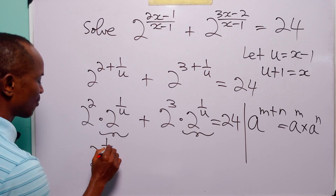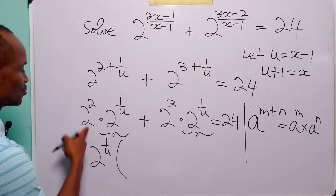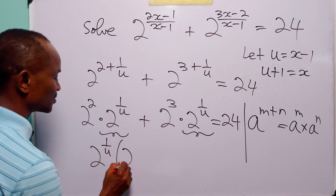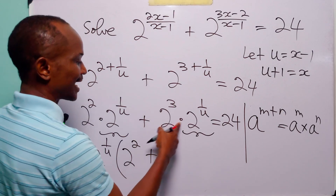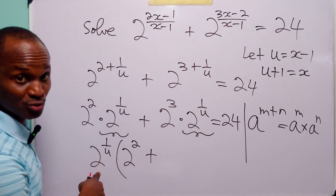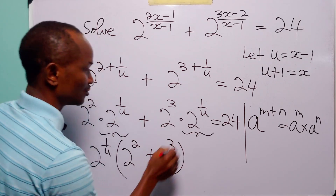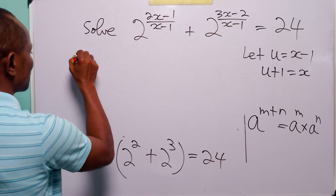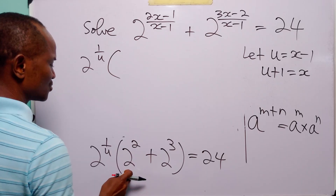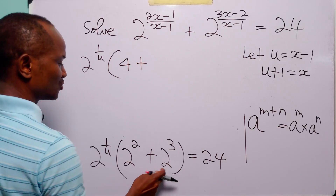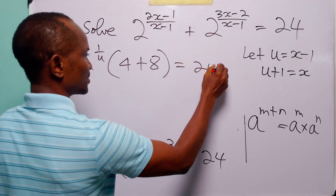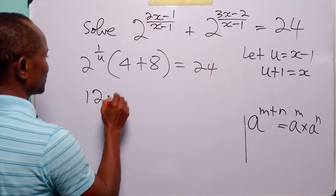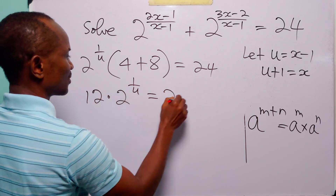So we have 2 to the power 1 over u multiplied by the remaining terms. 2 squared times 2 to the power 1 over u divided by 2 to the power 1 over u leaves us with 2 squared. This is equal to 24. So this becomes 2 to the power 1 over u multiplied by 2 squared, which is 4, plus 2 cubed, which is 8, and this is equal to 24. Now, 4 plus 8 is equal to 12. So this is 12 times 2 to the power 1 over u is equal to 24.